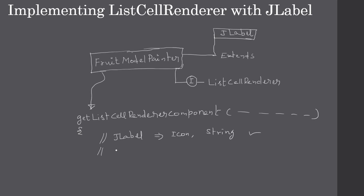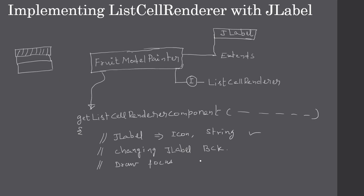As part of this rendering we also take care of changing the JLabel's background. When our list item is displayed we need to show which list item is selected, so the selected list item will have a different background compared to a normal list item. For some items we also need to set a focus rectangle - so if item one is selected we show that with a different background color, and if an item has focus we draw a border around it to show that the particular item is in focus.